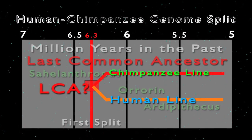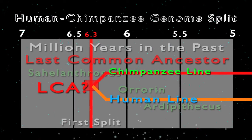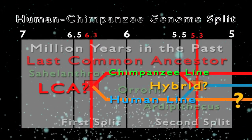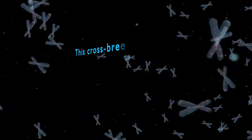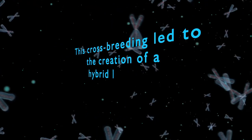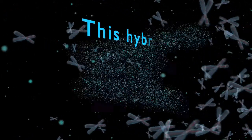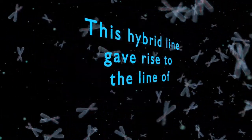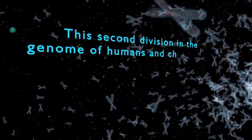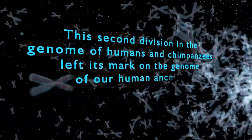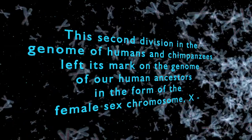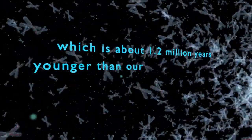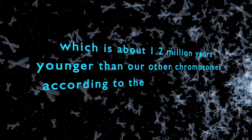This genetic research points to a second surprising conclusion. Around 5.3 million years ago, there was crossbreeding between the chimpanzee line and the line of our human ancestor. This crossbreeding led to the creation of a hybrid line that was genetically viable. This hybrid line gave rise to the line of our human ancestor. This second division in the genome of humans and chimpanzees left its mark on the genome of our human ancestors in the form of the female sex chromosome X, which is about 1.2 million years younger than our other chromosomes according to the evolutionary clock.